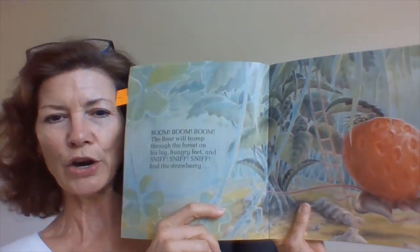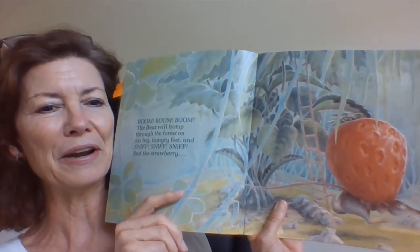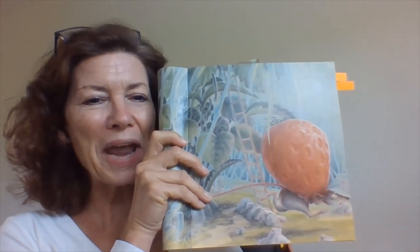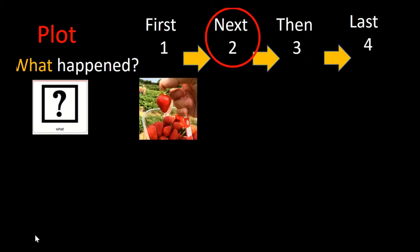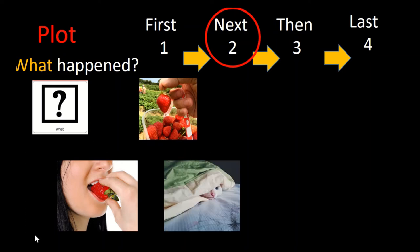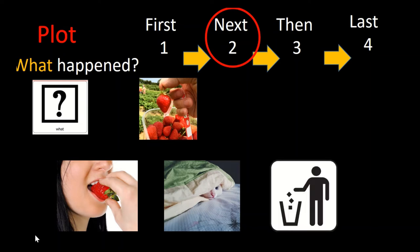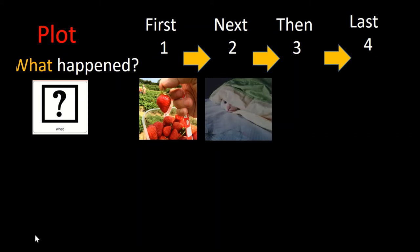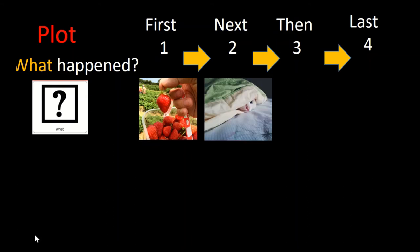Next, he heard about a big hungry bear who loved strawberries. And so that little mouse got that strawberry and ran away with it. He tried to hide it and disguise it. Did he eat the strawberry? Did he take the strawberry and hide under a blanket and disguise it? Or did he throw the strawberry in a trash can? Did you say that he took the strawberry and hid it under a blanket and disguised it? Nice job thinking about the details of the story.